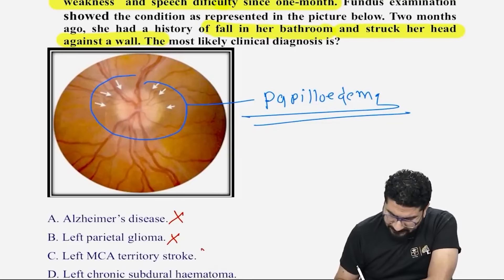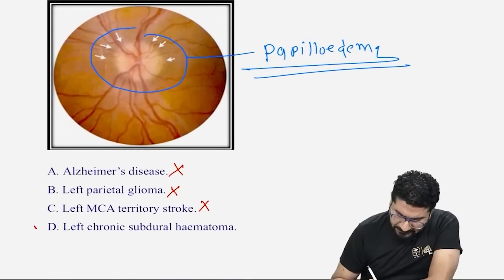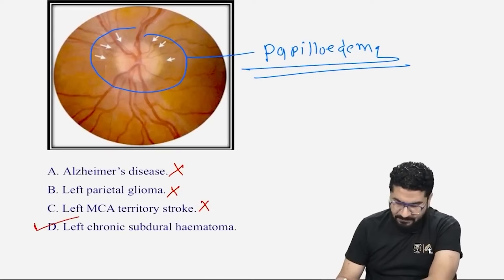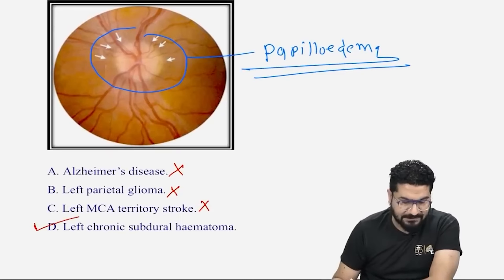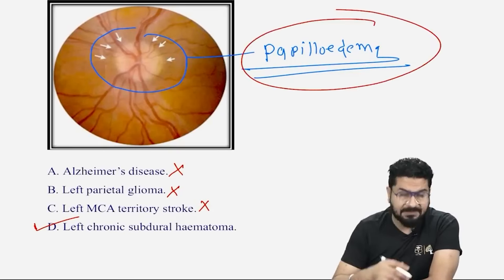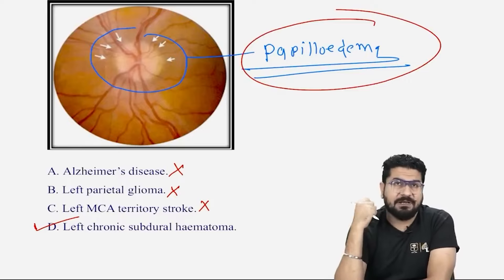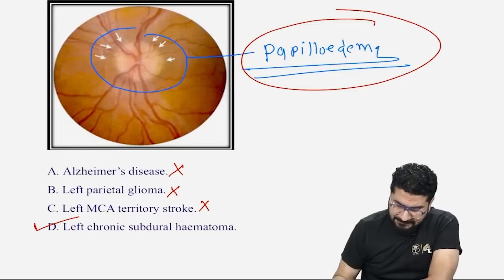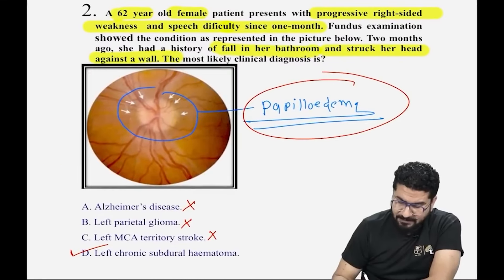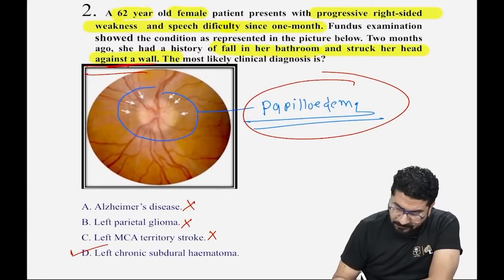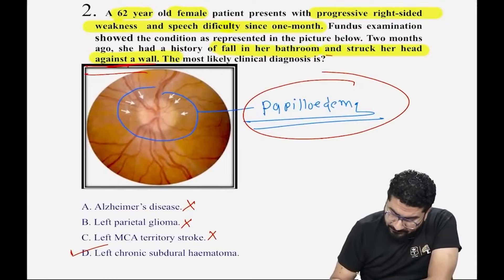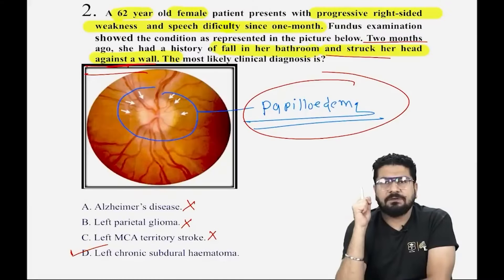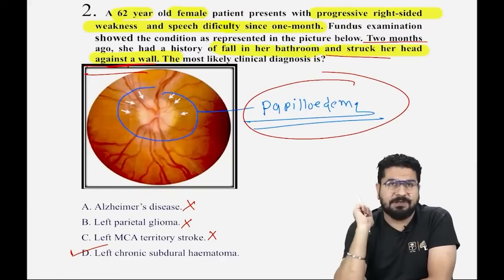This is a case of chronic subdural hematoma. In chronic subdural hematoma, the patient can develop papilledema along with visual blurring and headache. With the history of a fall two months ago, this is a case of chronic subdural hematoma causing papilledema.